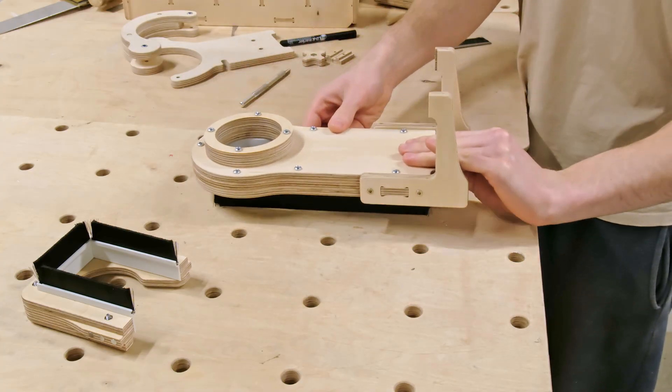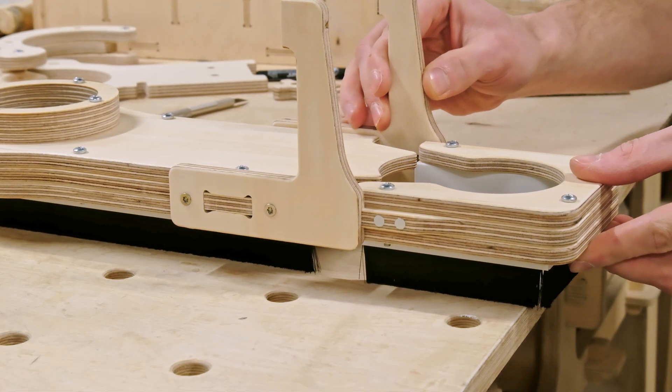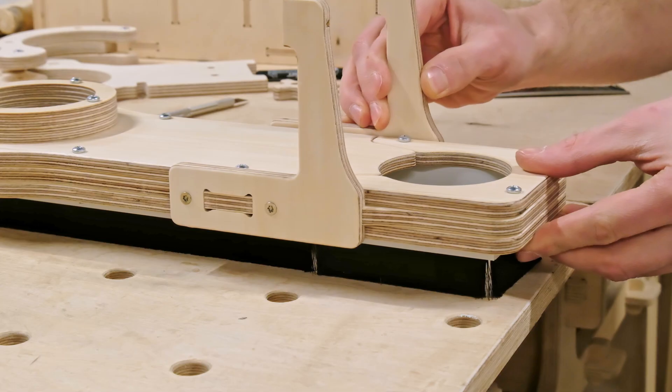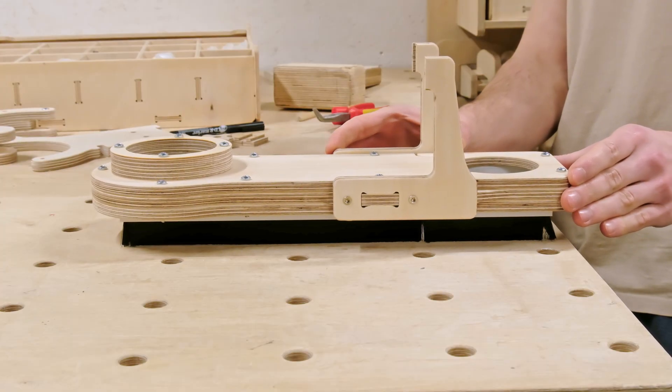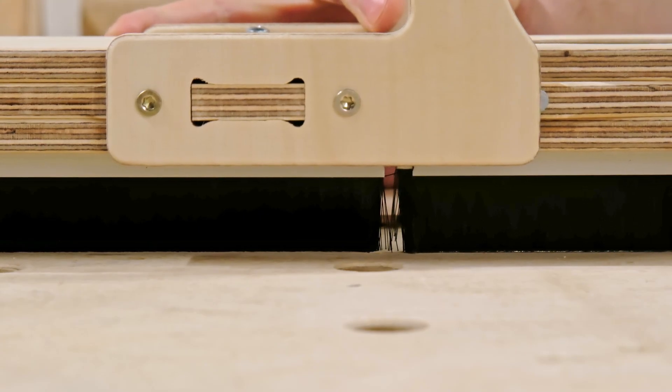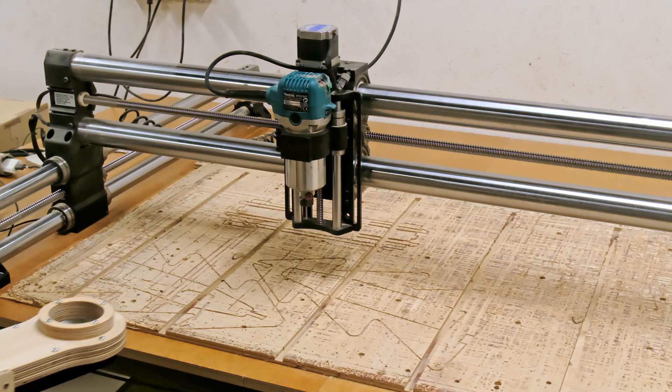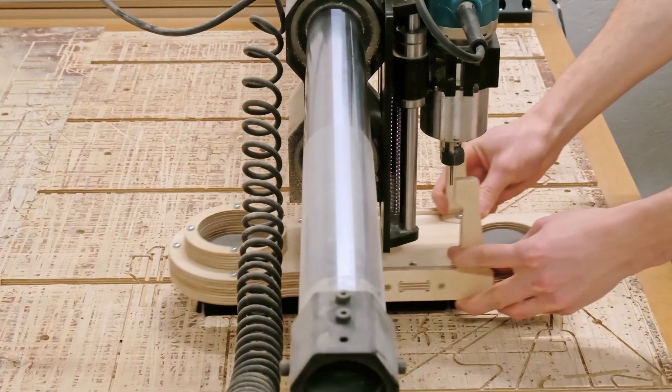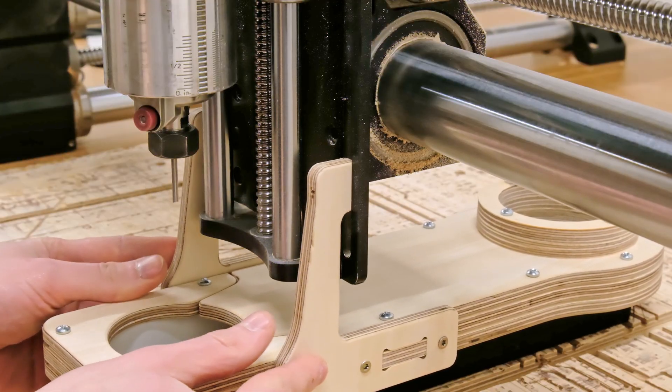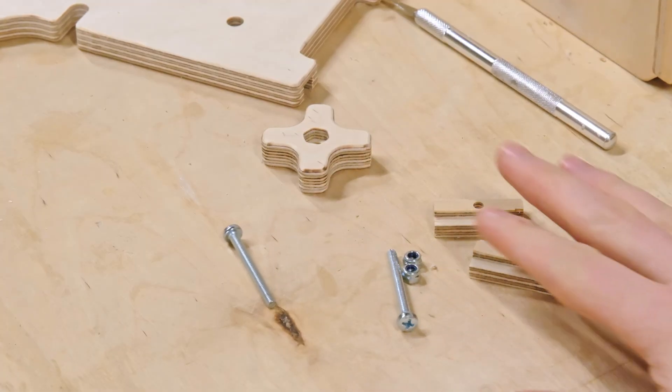When all the brushes are made, we can assemble the dust shoe and see how well the brushes seal the dust collection area. To be honest, it doesn't look perfect. But the small gaps we have shouldn't affect the dust collection that much. But the only way to find out is by attaching the assembly to our CNC router and doing some test cuts.